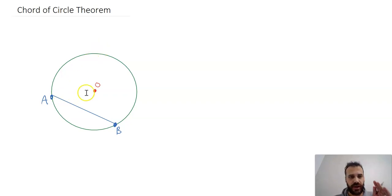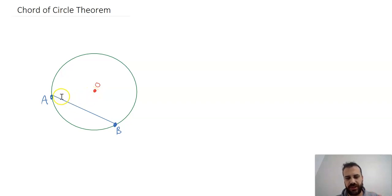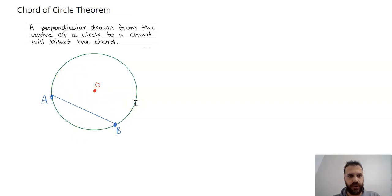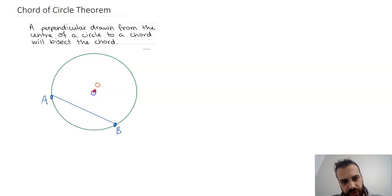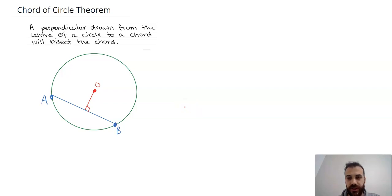My chord is drawn, my origin is there. I need to be very explicit about what this looks like. So the theorem states: a perpendicular drawn from the center of a circle to a chord will bisect that chord. Perpendicular means makes a right angle with, so we're drawing a perpendicular line from the center to the chord so that they make right angles with each other — a line from the origin to the chord making a right angle.